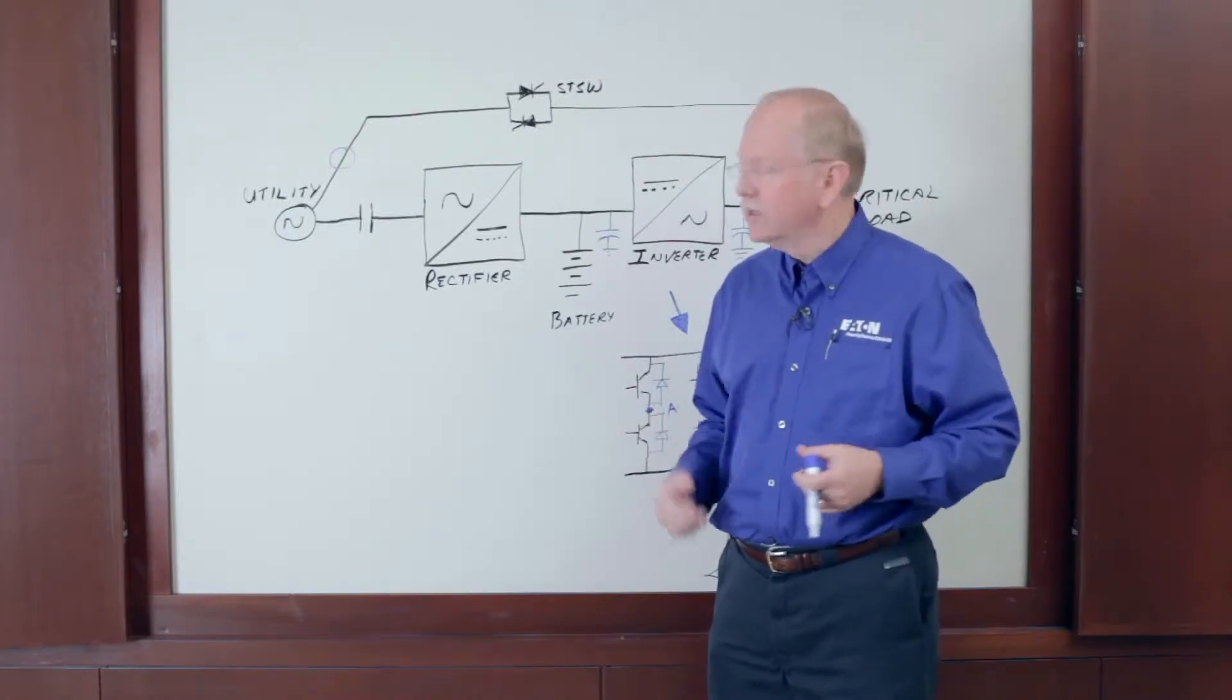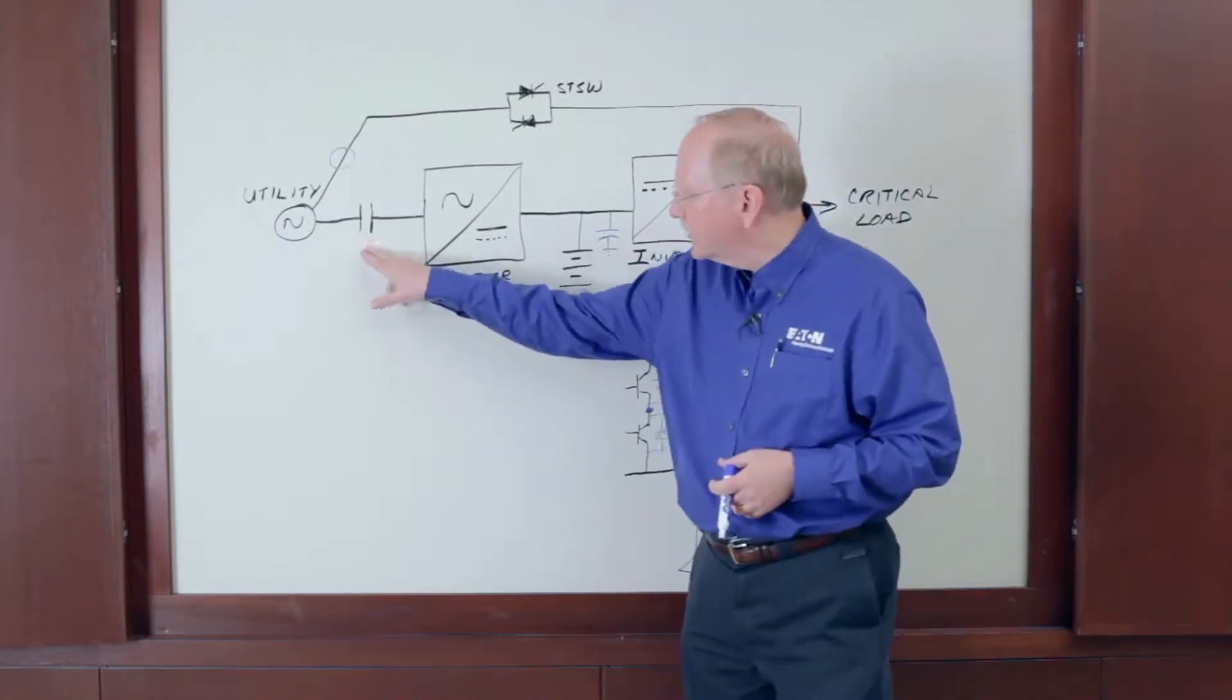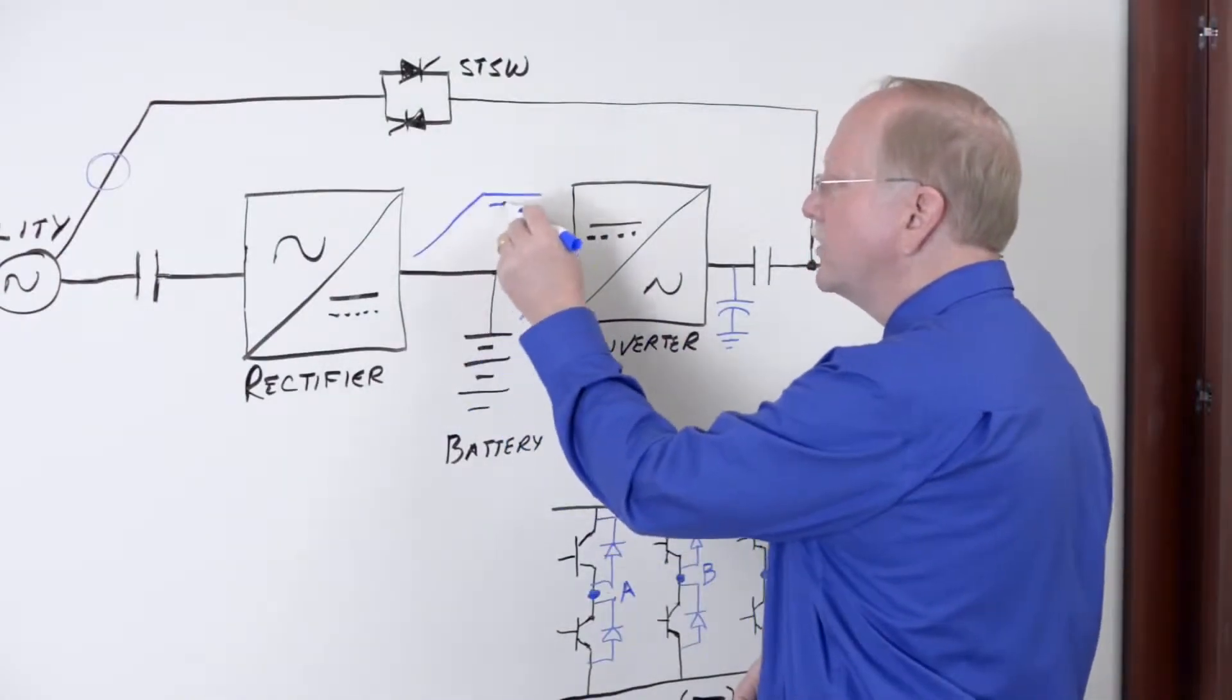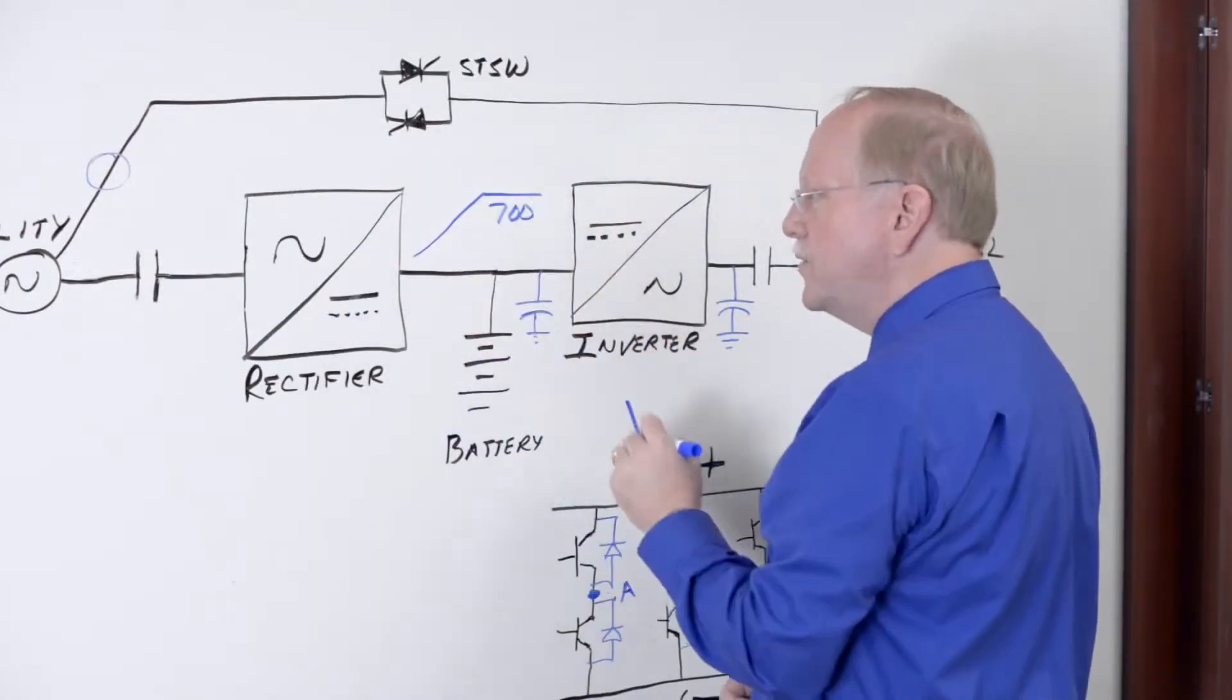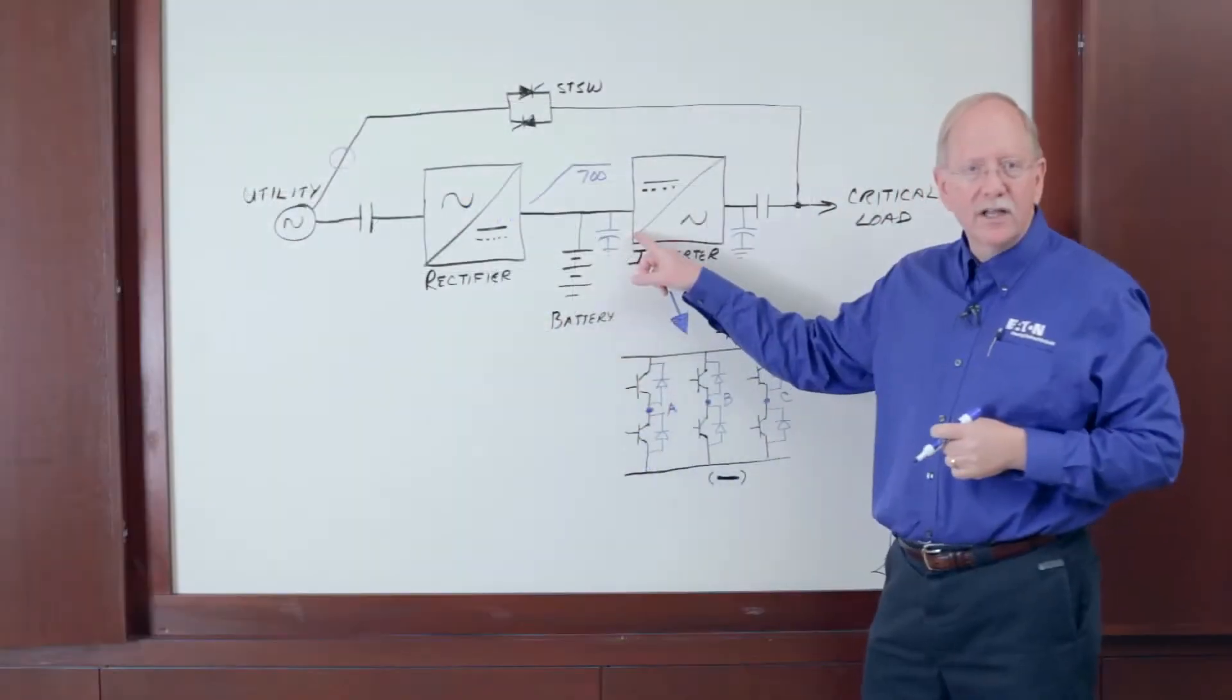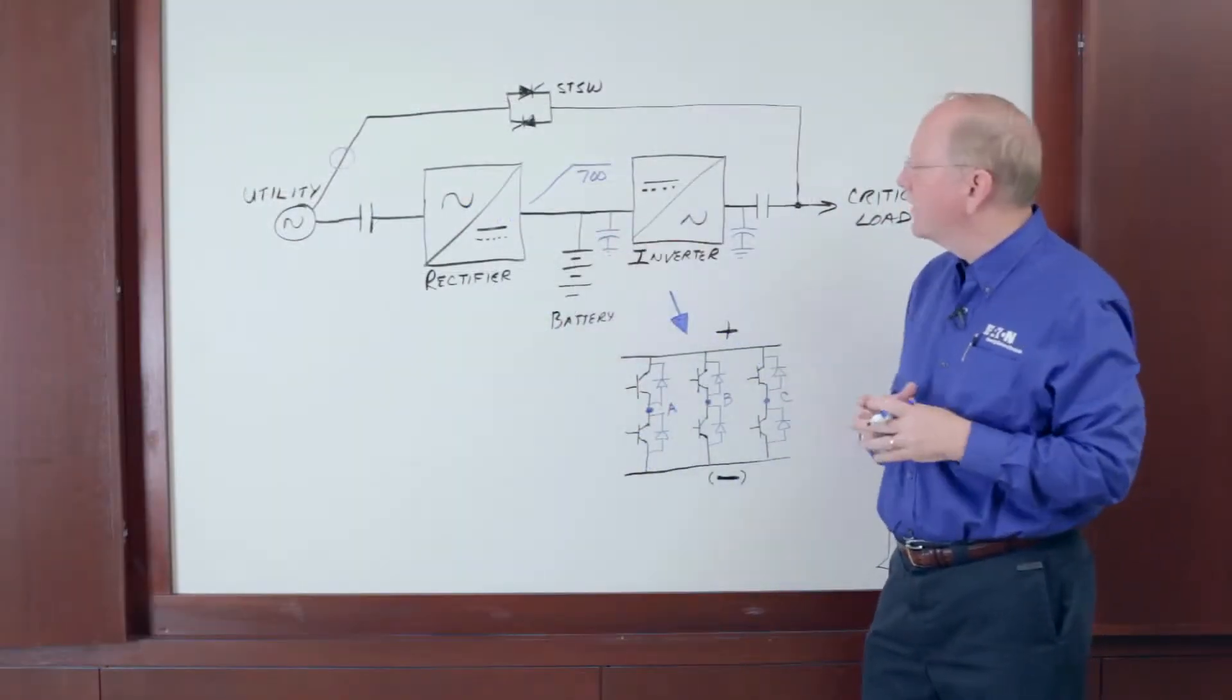How do we do that traditionally? Well, you've got to close the input contactor. You have to wait for the rectifier to ramp from zero to 700 volts DC. It's got to do that slowly over about 30 seconds or else you'll stress the capacitors connected in the DC link between the rectifier and the inverter.